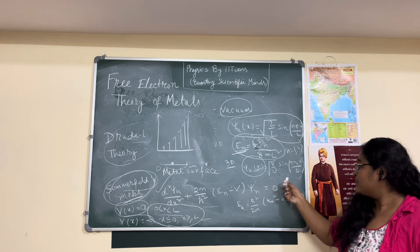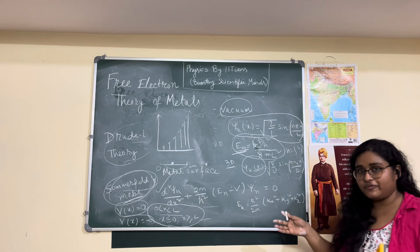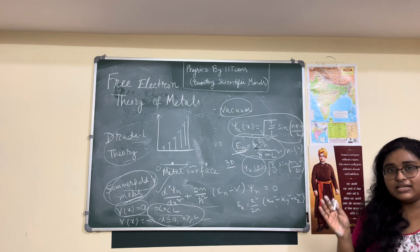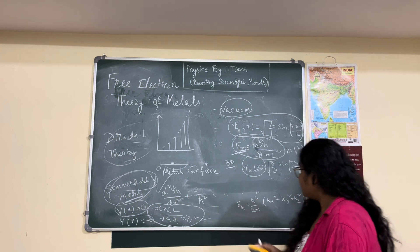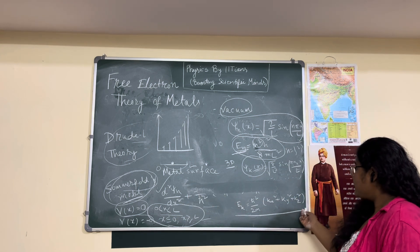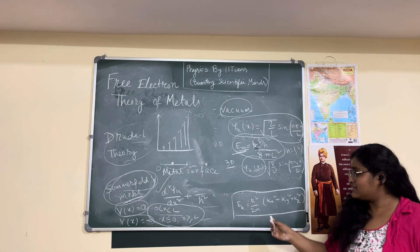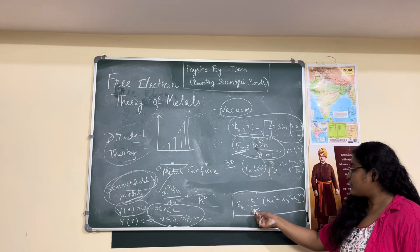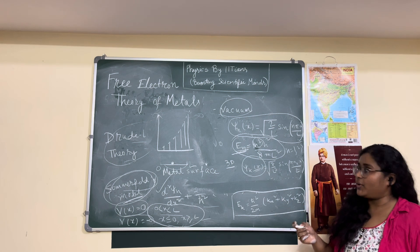And you can also write this as 1/√V e^(ik·R), so it is an electronic wave function inside the 3D metal box. And if we solve the energy eigenvalue for the three dimensions, we will get E = ℏ²/2m(k_x² + k_y² + k_z²).